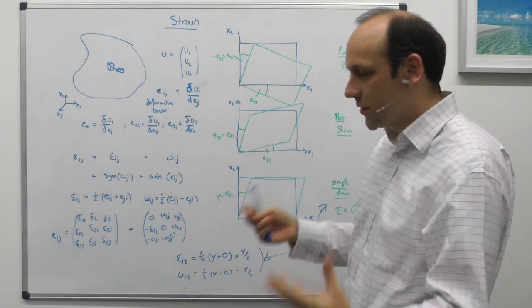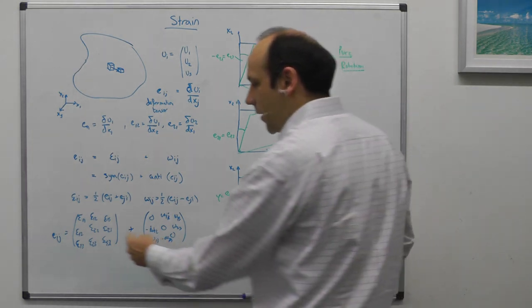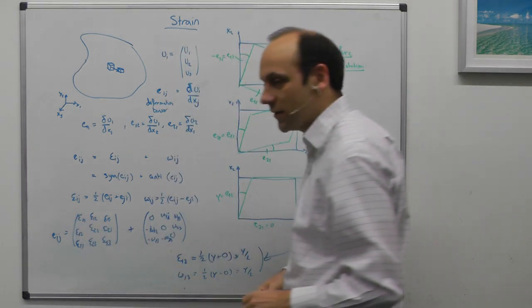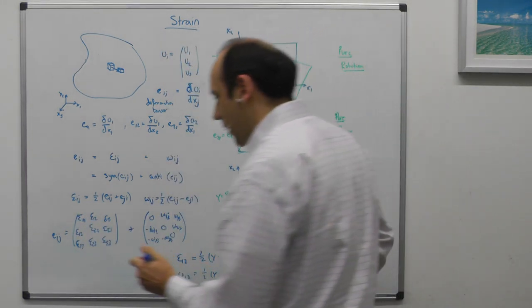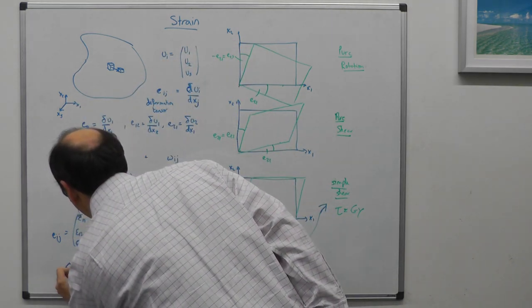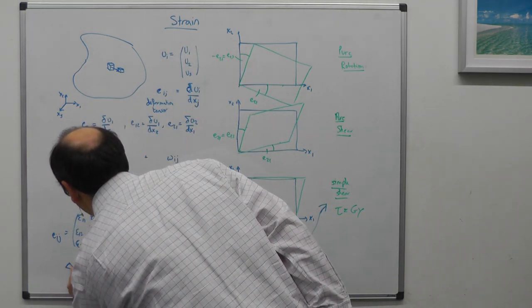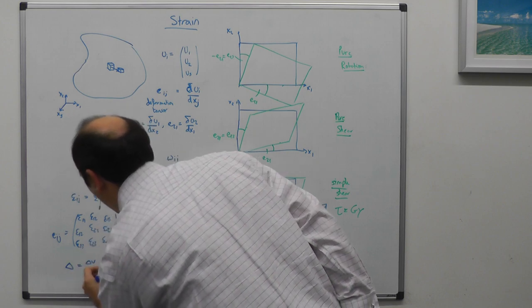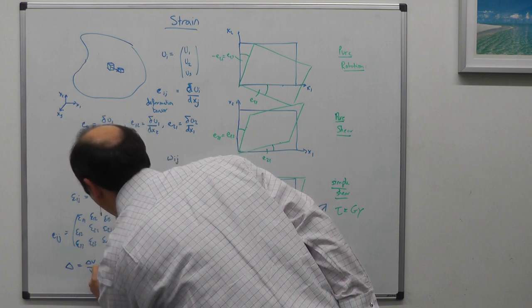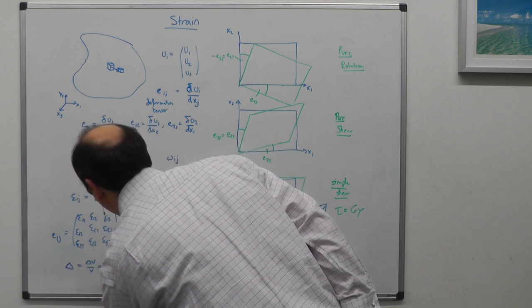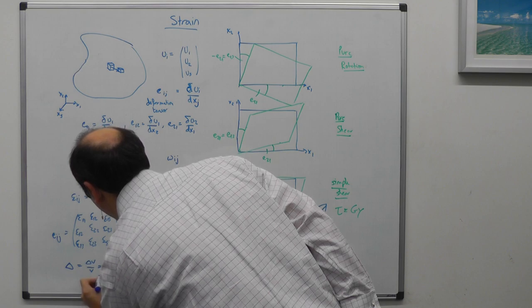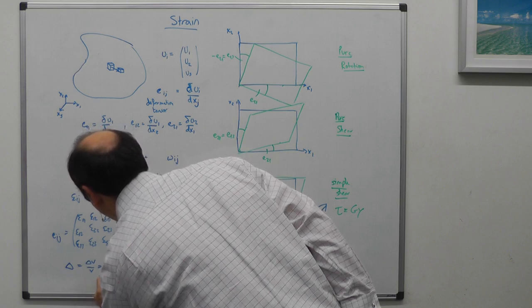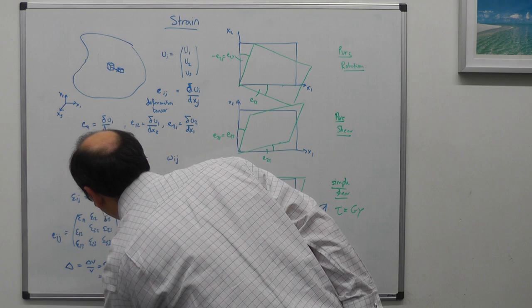We could also define the volume change, being the trace of this matrix, as being delta is the volume change, delta v over v. And if you go and work it out, that's equal to strain 1,1 plus strain 2,2 plus strain 3,3, which is equal to 3 times the trace of the strain ij.